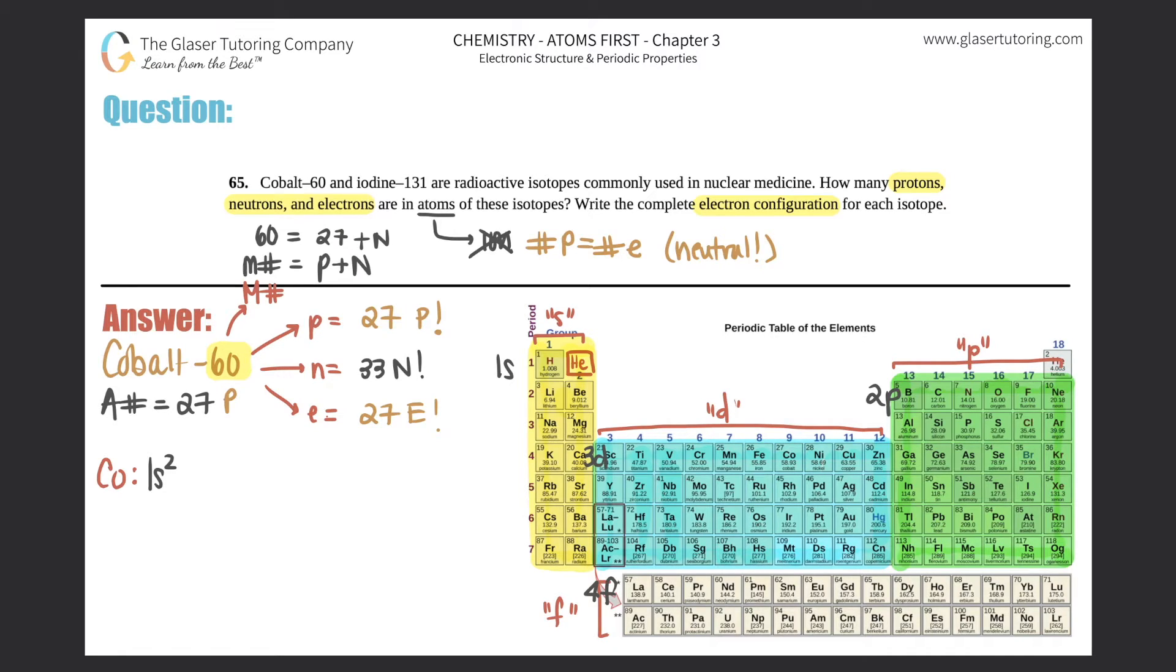because we have to pass both boxes. We're now over here. That's 2s2, because I got to pass both boxes. Now I'm over here in the 2p realm, so 2p6. I'm down over here. That's the 3s2. I'm over here now. That's the 3p6. And I'm over here, the 4s2.